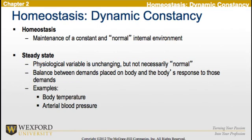Now, looking at homeostasis, this is referred to as dynamic constancy. Homeostasis would be defined as the maintenance of a constant and normal internal environment. Now, if we're looking at steady state, that is a physiological variable that is unchanging, but in some cases not necessarily normal — the balance between demands placed on the body and the body's response to those demands. Examples would be body temperature as well as arterial blood pressure.